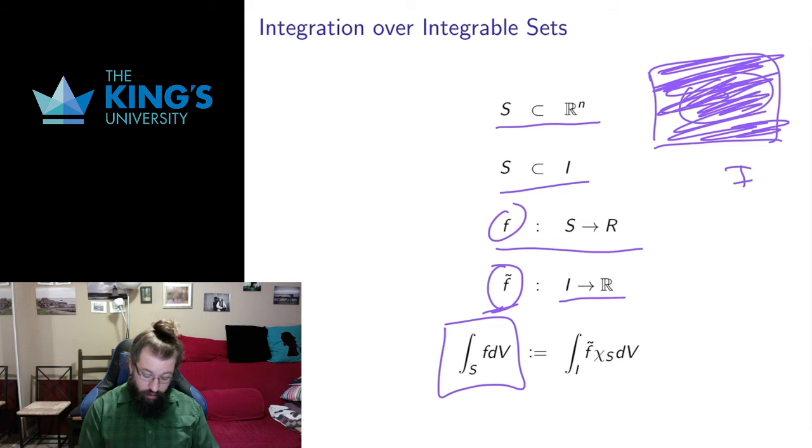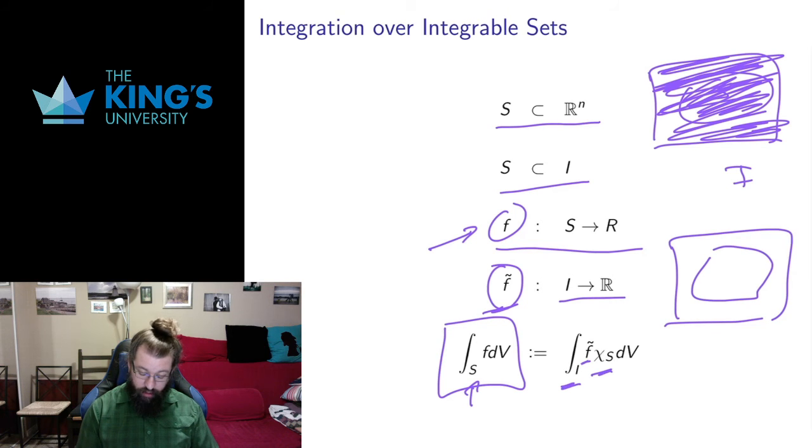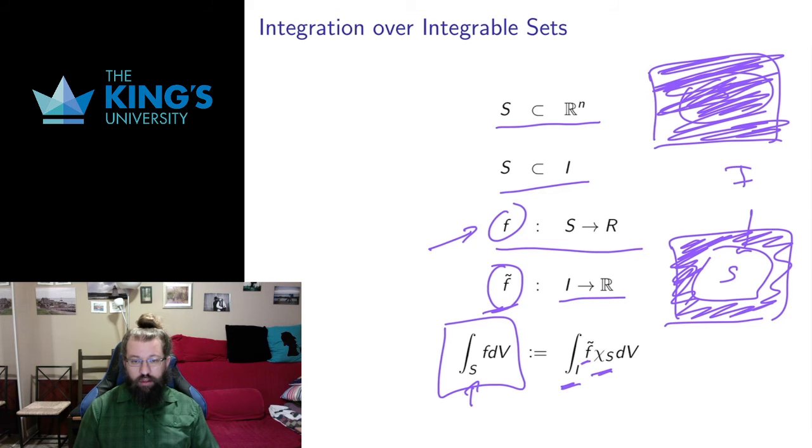Then by definition the integral of this function f over this integrable set S is the integral over the whole interval of the extension multiplied by the characteristic function. So again if I were to draw this I have f acting on the set S, and then everywhere else I'm multiplying by zero. So the things that contribute to the integral outside that, they're just going to all disappear. So multiplying by the characteristic function multiplies by zero outside the set S. And that gives me a well-defined integral for a function on an integrable set.